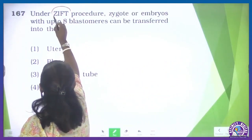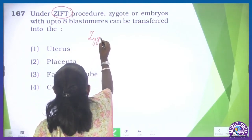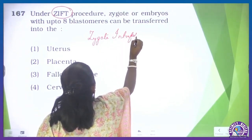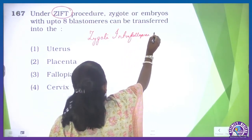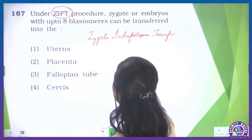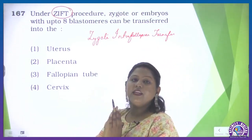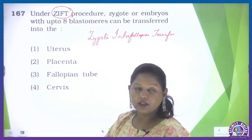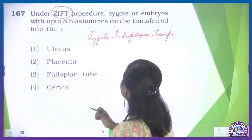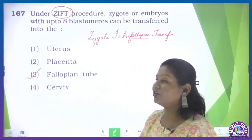Question 167: ZIFT — zygote intrafallopian transfer. In zygote intrafallopian transfer, either the zygote or the embryo up to the 8-blastomere stage is transferred. Blastomere is the daughter cell produced by the process of cleavage. It can be transferred to the fallopian tube, as the name indicates. So the correct option is the third option.